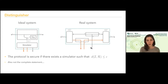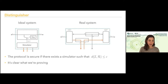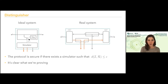We redefine our ideal system together with the simulator, and say the protocol is secure if there exists a simulator such that the distinguishing advantage between this new ideal system together with the simulator and the real system is small. One big advantage of taking this point of view — abstract cryptography, composable security — is that it is very clear what we're proving. When I say this distance is small, it's clear what my real system is and what my ideal system is.